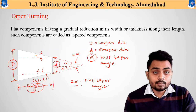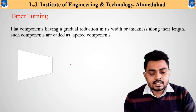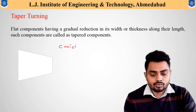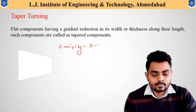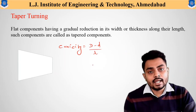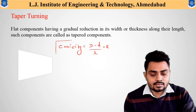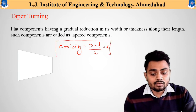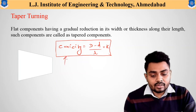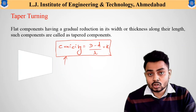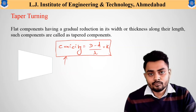Now we will understand another important terminology, which is conicity. Conicity is nothing but the ratio of the difference in diameters of the tapered component to the total length of the tapered component. That means capital D minus small d divided by L, and this conicity is also indicated as K. This conicity gives the relationship between the diameters of the tapered component and the length of the tapered component. Keep this definition in mind because it will be helpful in further formulas.